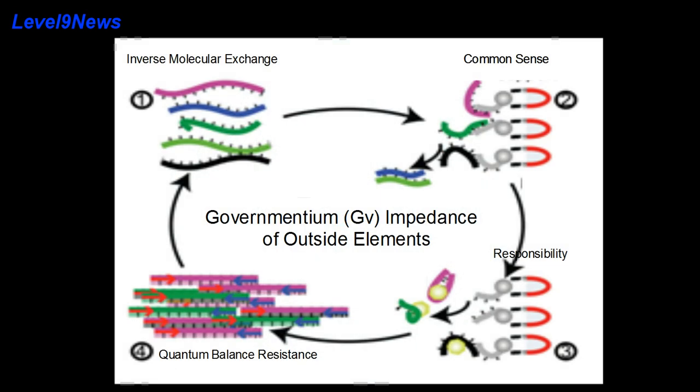Even a tiny amount of Governmentium causes a reaction which normally takes only a few days to complete four or more years to finish or resolve, at which point the reaction no longer resembles a natural path but takes on unexplained physical properties. This process is commonly referred to as quantum chaos.